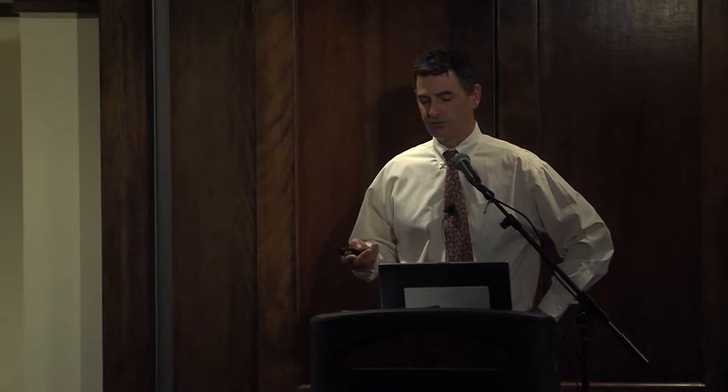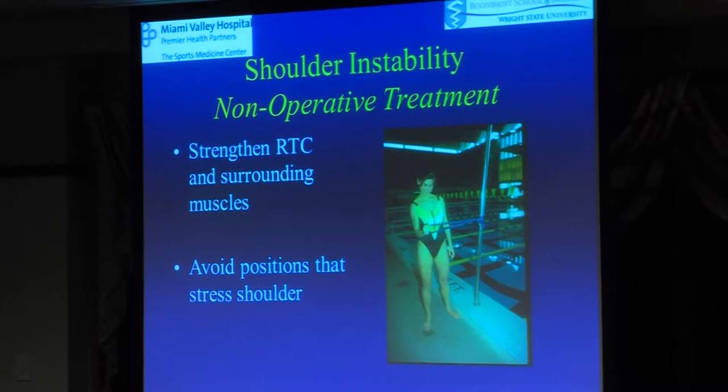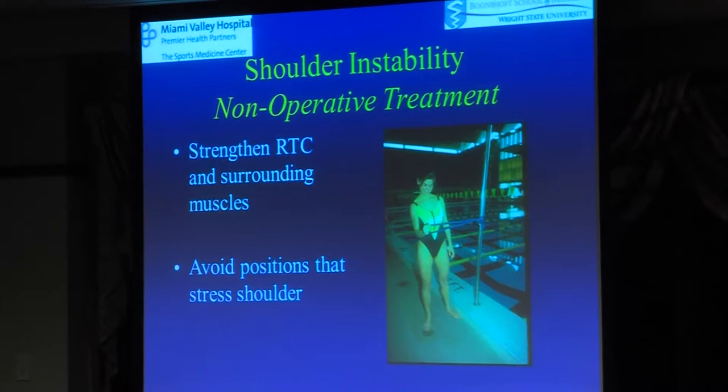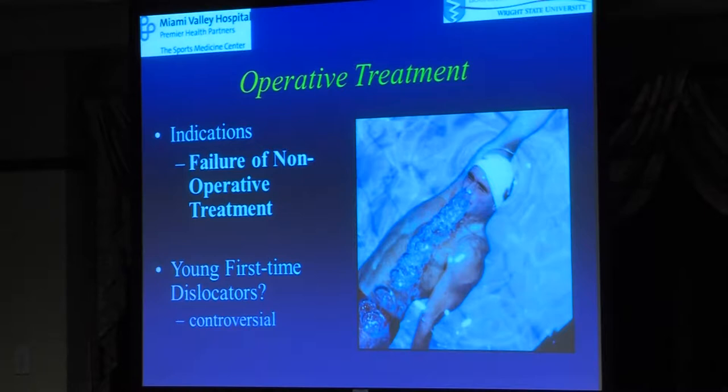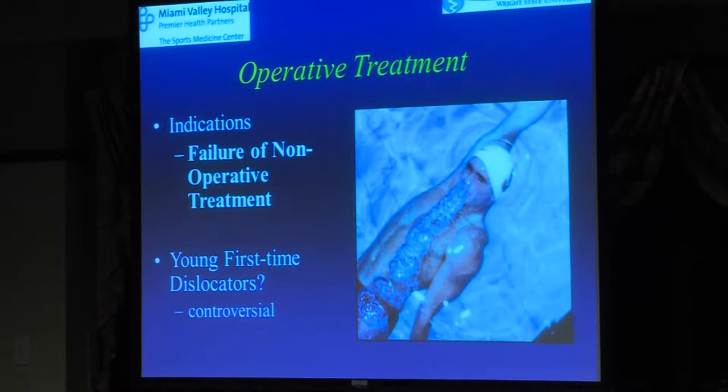Non-operative management is basically getting motion and strength back — the strength really being the rotator cuff and surrounding muscles for a dynamic stabilizing effect. You want to avoid positions that stress the shoulder, like abduction with external rotation, which would stretch the capsule. Who do we operate on? In my practice, basically the people who fail non-operative management — those who dislocate again or continue to complain of shifting or instability feelings, where they feel short slides or perching on the edge.